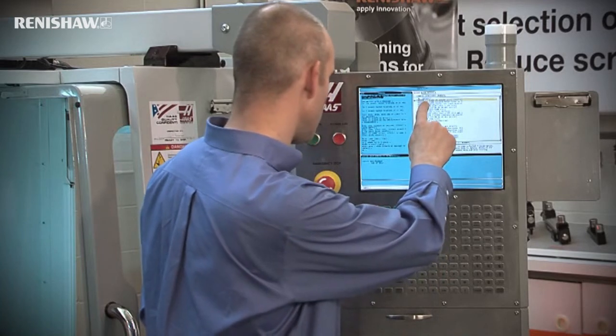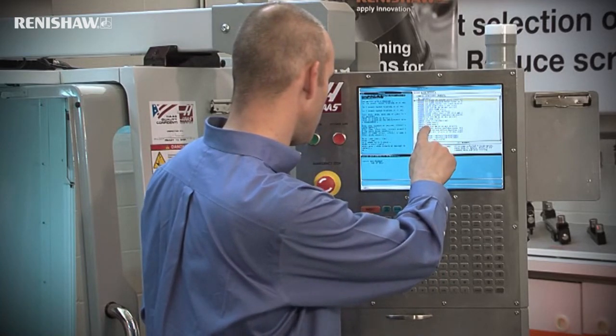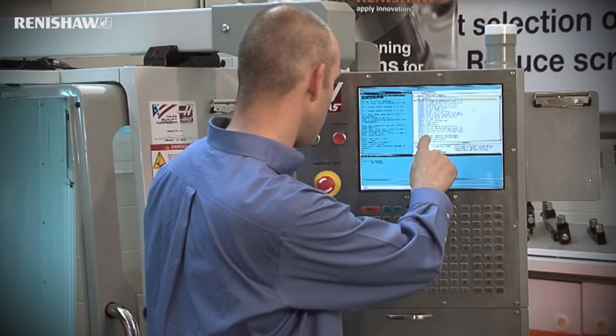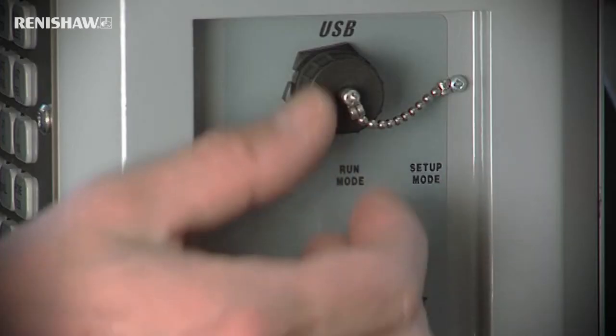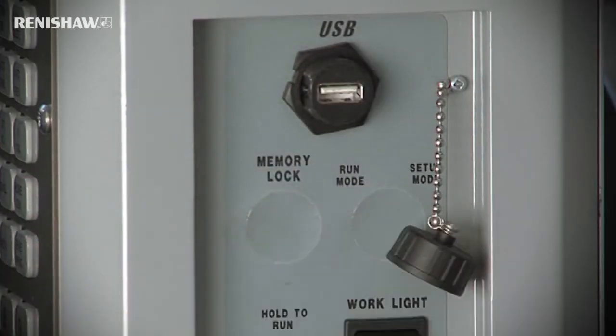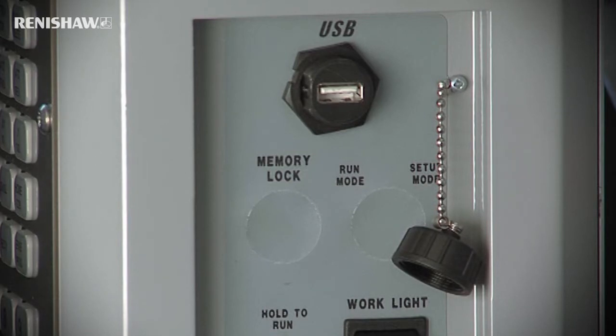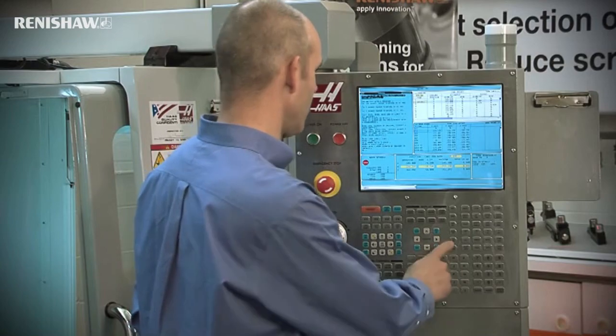Look at the machine control and identify an available program number. You will need a separate number for each individual test. Finally, determine how you will transfer the part program to the CNC control, either via a USB drive, memory card, diskette, or even by entering manually.